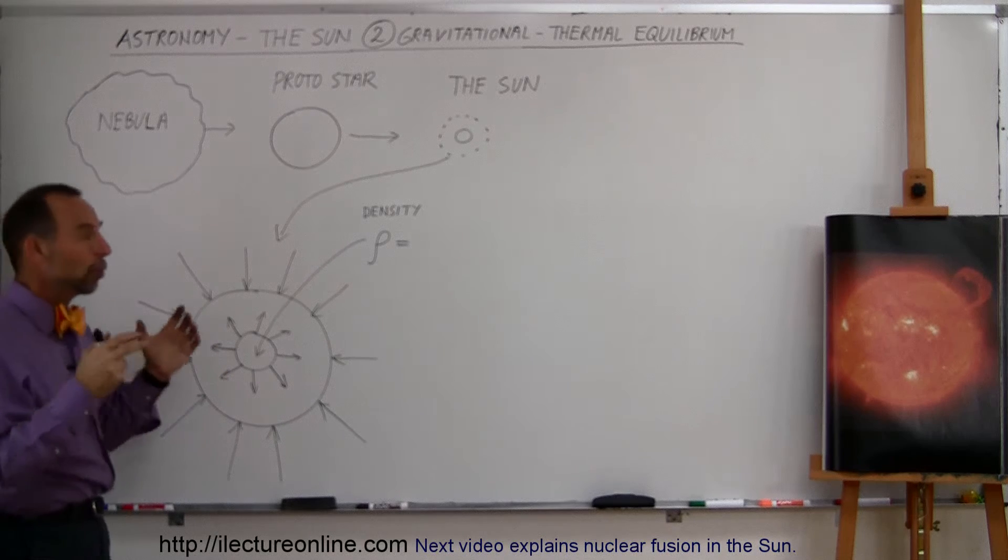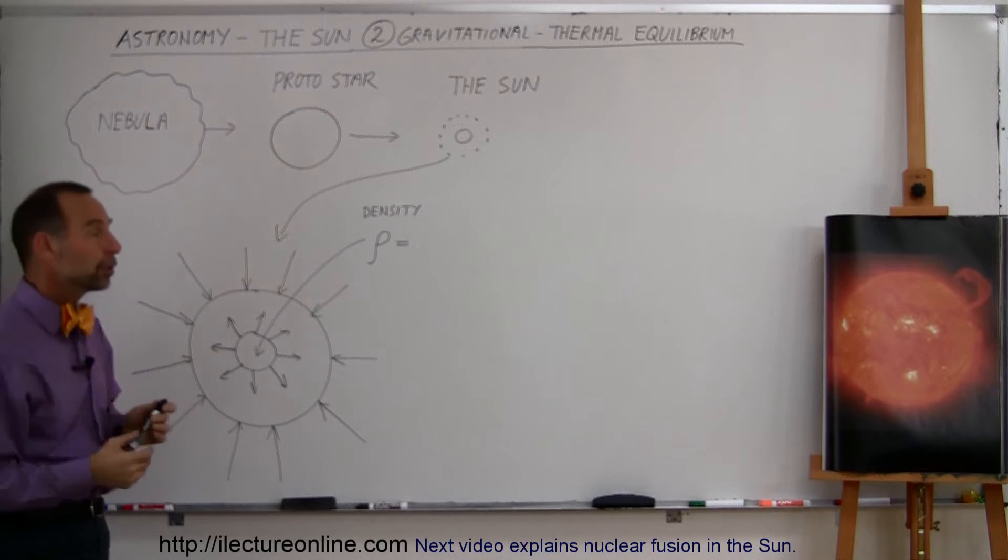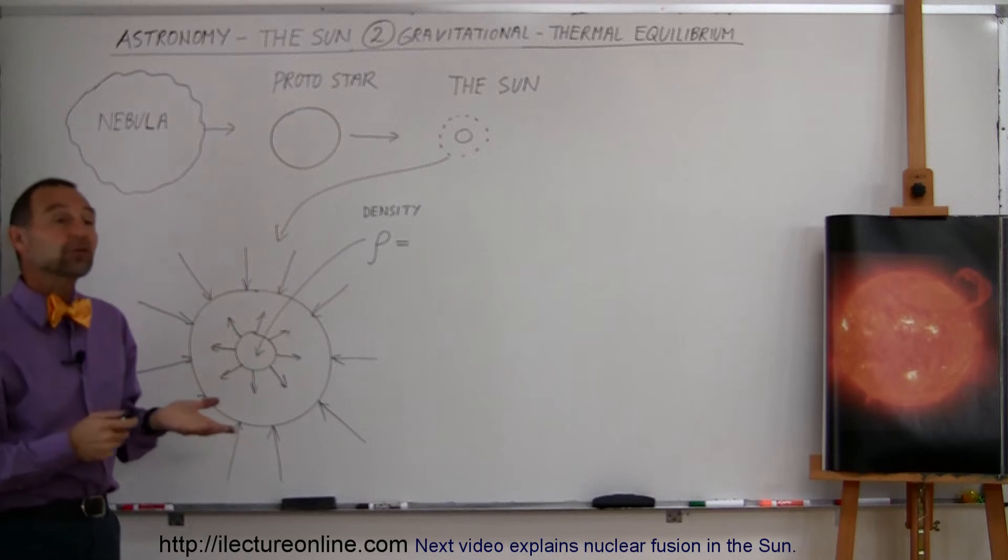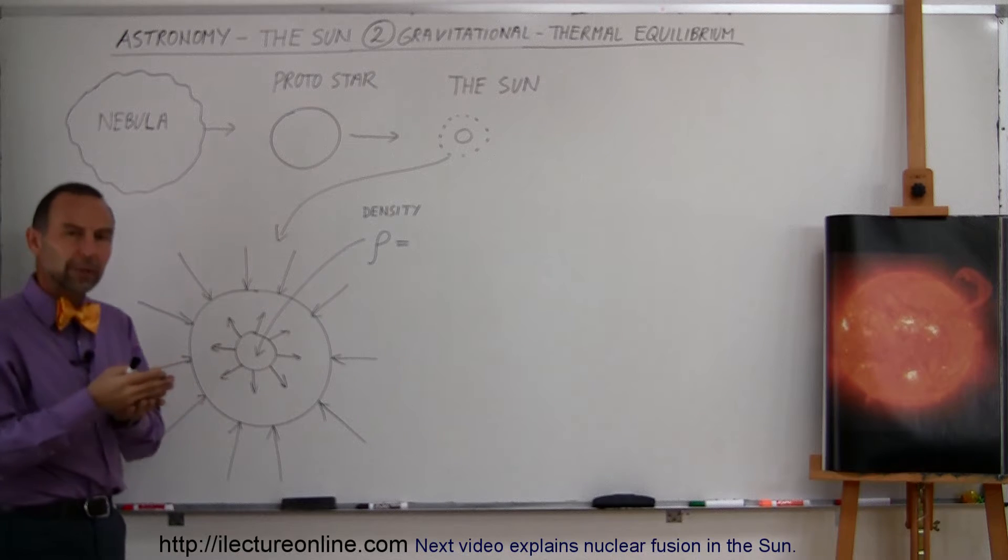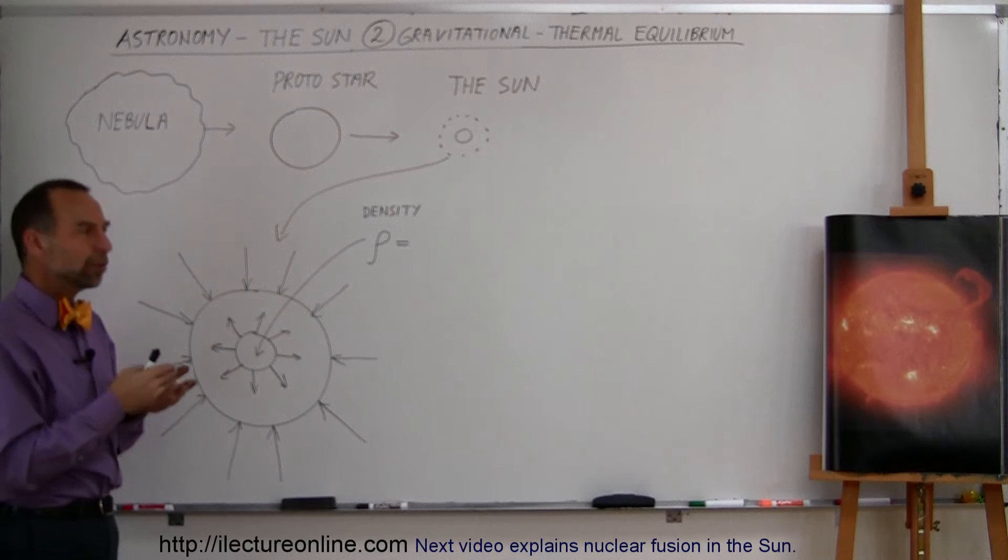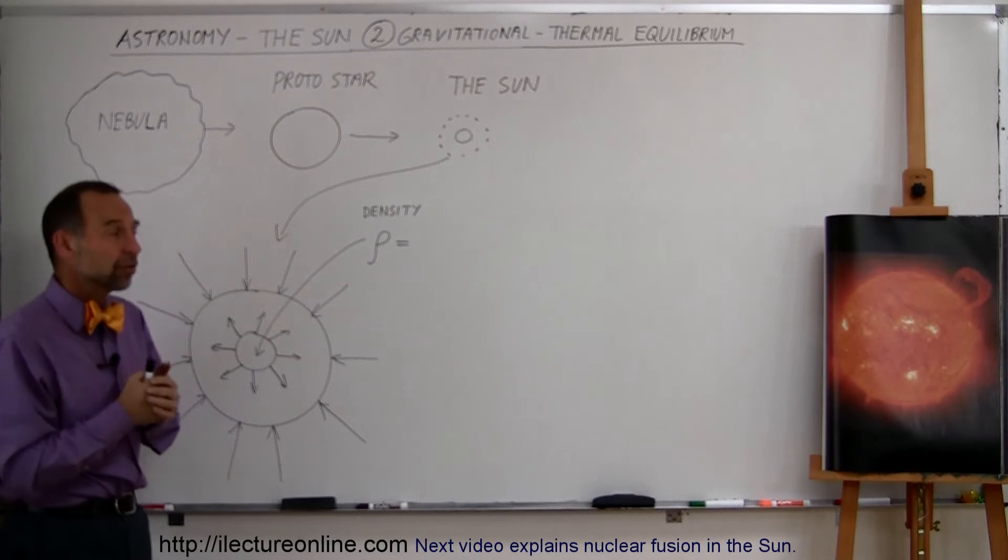So what happens is when a star begins to form, and stars are forming all the time in the Universe, our Sun is really not that old of a star. It's about 4.6 billion years old, and our Universe has been around for 14 billion years, which means our Sun didn't exist for almost the first 10 billion years of the existence of the Universe.